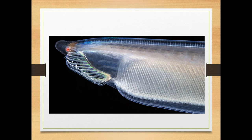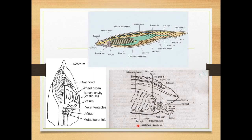Below the anterior pointed end there is a funnel-shaped cavity called the vestibule or stomodeum. This vestibule is surrounded by a frill-like membrane called the oral hood. This enlarged picture shows the oral hood clearly.